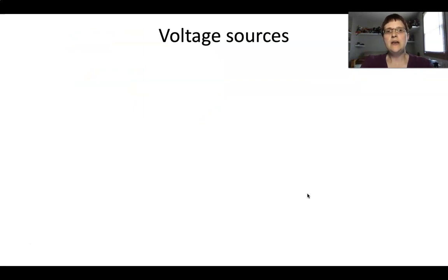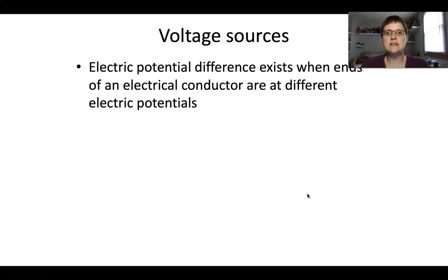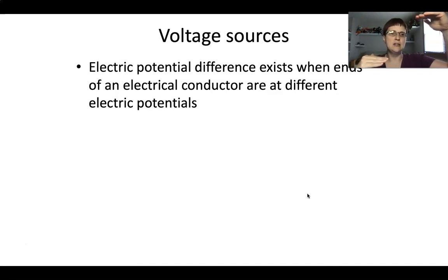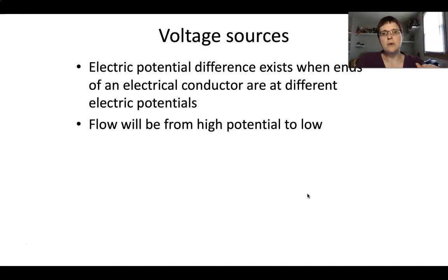Electric potential difference exists when the ends of an electrical conductor are at different electrical potentials. You can think of it like being on a hill — your energy potential is very high at the top and very low at the bottom. If you're a conductor connected to each end, the potential difference is the difference between the energy at the top and the energy at the bottom, similar to kinetic energy on a bike at the top of a hill. Voltage always flows from high potential to low potential.